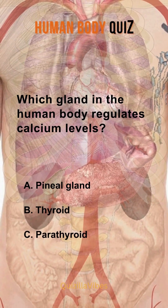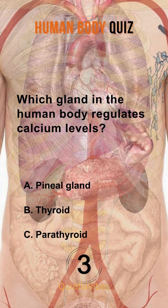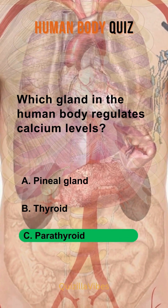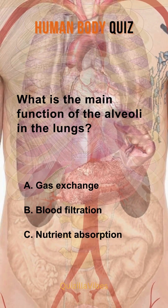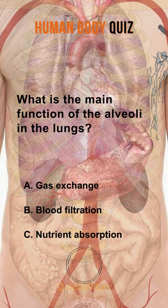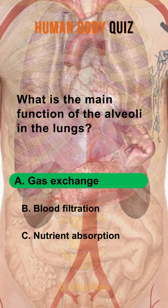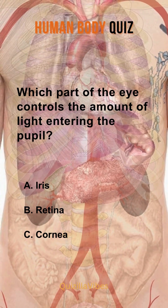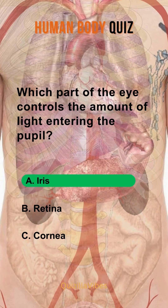Which gland in the human body regulates calcium levels? Parathyroid. What is the main function of the alveoli in the lungs? Gas exchange. Which part of the eye controls the amount of light entering the pupil? Iris.